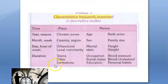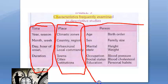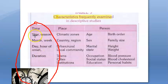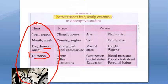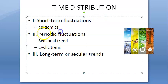Time distribution — is the disease occurring in a particular year, a particular season, a particular month or week, or at a particular day or hour? What is the duration? This is the time distribution. They say it could be a short-term fluctuation, a periodic fluctuation, or a long-term or secular trend.